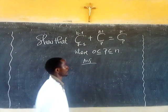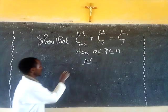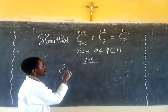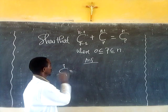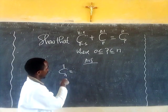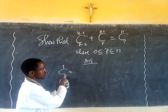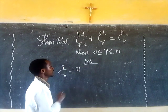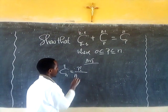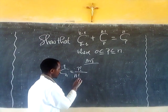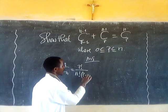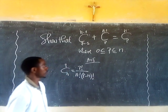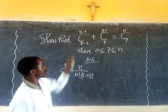The combination C(N, P) is defined as N factorial divided by P factorial times N minus P factorial.